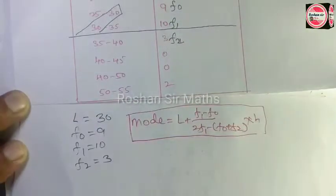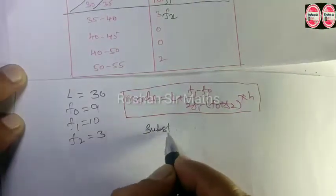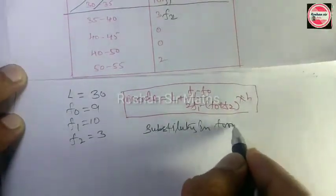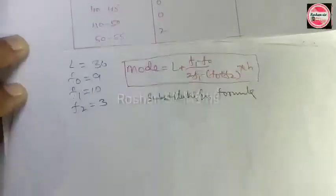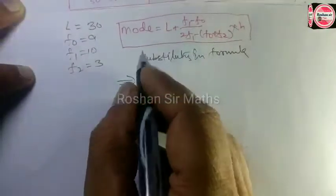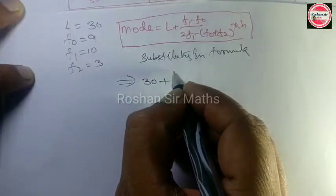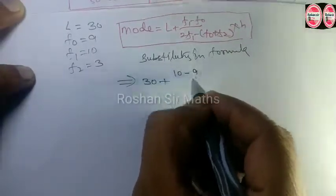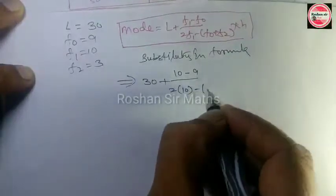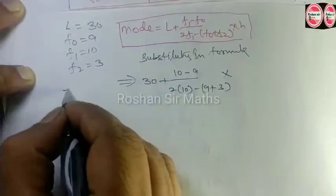अगले step में इसको substitute in formula करेंगे। Mode: L कितना है - 30, F1 कितना है - 10, F0 - 9, by 2 into F1 - 10, minus F0 - 9, minus F2 - 3. और H यहाँ पर 5 है।